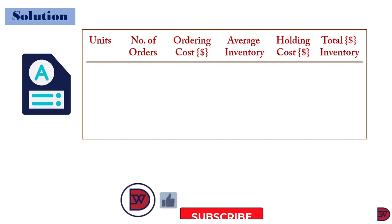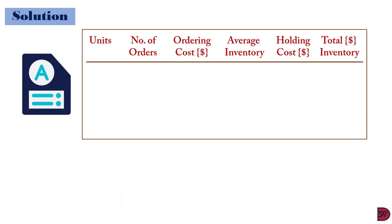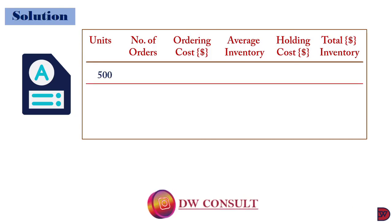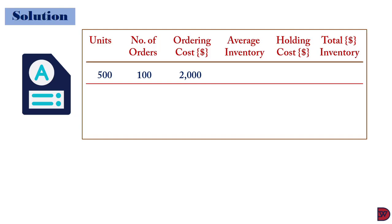Moving on to the solution, we will have the following headings: number of units, number of orders, ordering cost, average inventory, holding cost, and total inventory cost. Starting with 500 units — the number of orders will be 100, that is the 50,000 divided by 500. It means each order has 500 computers coming in, so if they are going to order 50,000 for a year, they will place 100 orders. The ordering cost will be the cost per order ($20) times the number of orders (100), giving $2,000.